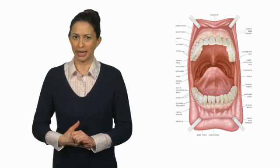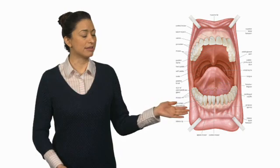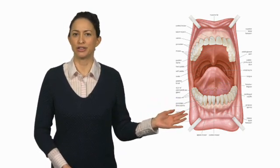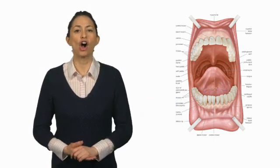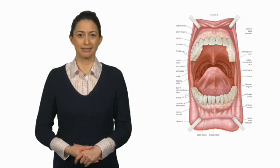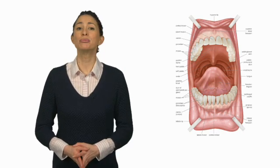This is what our teeth look like. These teeth are called incisors. These teeth are called canines and these teeth are called molars.